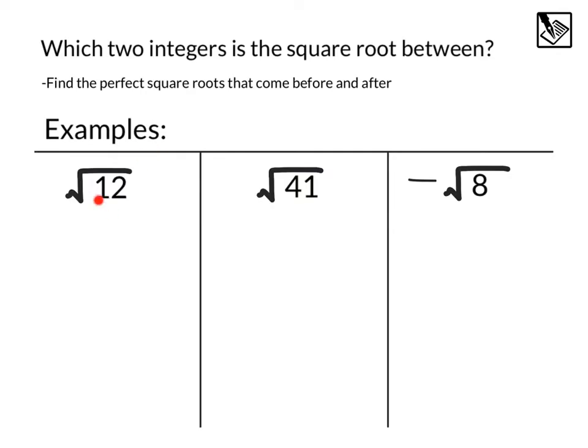Let's take a look at this example, square root of 12. So I'm thinking of perfect square roots that come before and after, and my mind comes to the square root of 9 and the square root of 16. We can see that 12 is directly in between 9 and 16.